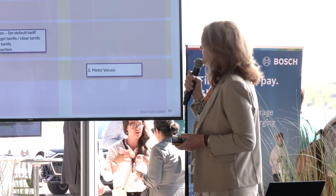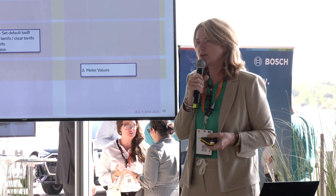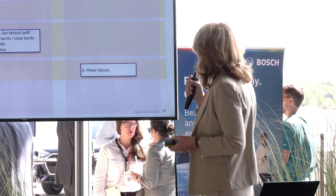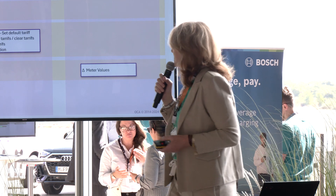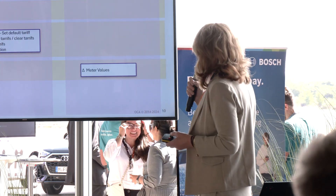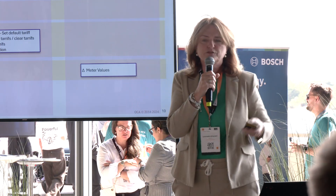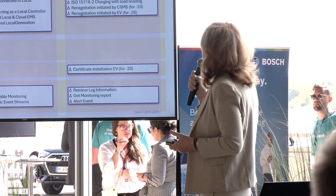For remote control, we included a remote start for a fixed cost, energy, or time — same as the prepaid concept. Availability and reservations have no changes at all from 2.0.1. Regarding tariff and cost: a lot has been added in 2.1 around payment, tariff, and cost. For meter values, there's an addition where you don't have to send meter values as frequently — a small but notable change.